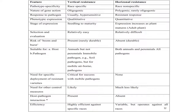The response to pathogen in vertical resistance is a hypersensitive response, but in horizontal it is a resistant response. Phenotypic expression of vertical resistance is qualitative and horizontal is quantitative. Stage of expression: in vertical it is seedling to maturity; in horizontal expression increases at plant maturity or adult stage. Selection and evaluation of vertical resistance is easy but in horizontal it is quite difficult. Risk of boom and burst is present in vertical resistance.